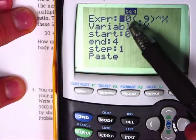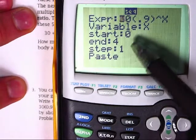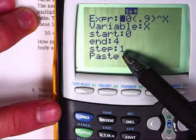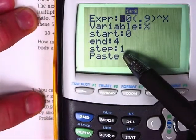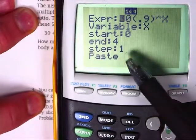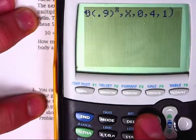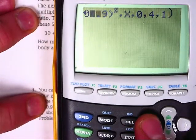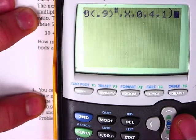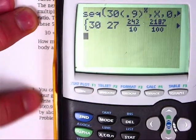You type in your expression first, 30 times 0.9 to the x. Your variable is x, starting and ending. It has another part for step size of 1. We always use a step size of 1, so you don't actually have to type that in because that's the implied step. If you enter all that stuff and go down to paste and hit enter, it automatically puts all that stuff into your format for you. But either way, it's going to look like that in the end as you type it, or if it does it for you. And when you hit enter, it's going to give you all those terms again.